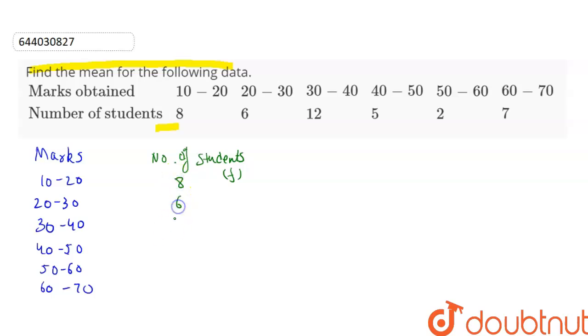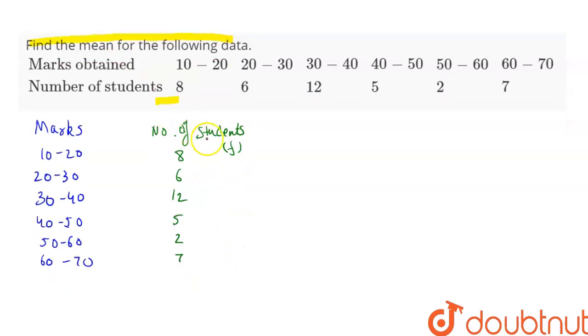So first we will find the column X. X is the middle value of the class interval. That is 10 plus 20 by 2, that is 15. The middle value for this is 25, then 35, 45, 55, and 65.